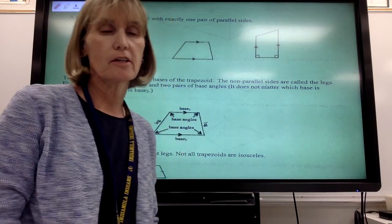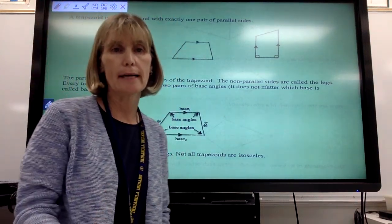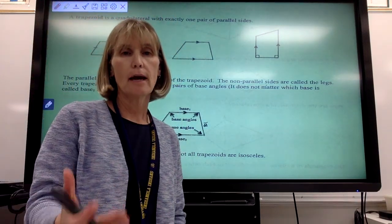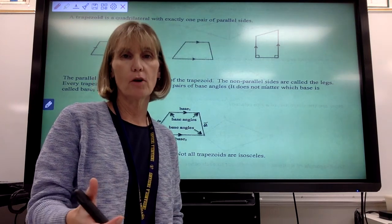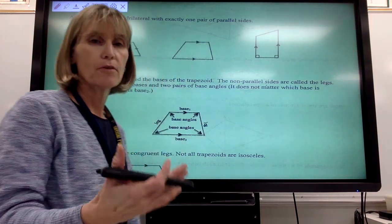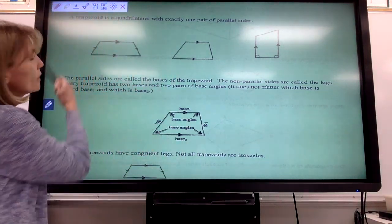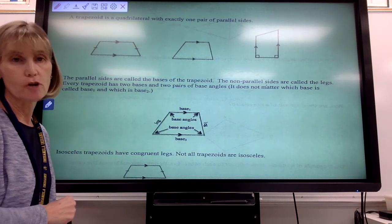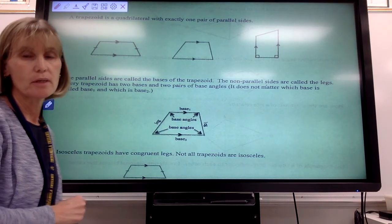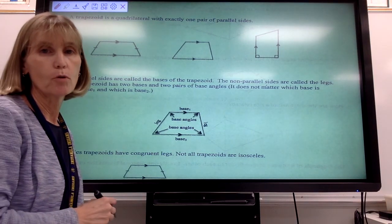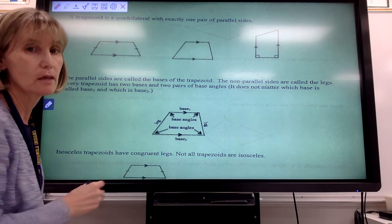In the second part of section 6-2, we've talked about kites. A kite was a quadrilateral, a type of quadrilateral. But there's another type of quadrilateral that we're going to look at, and it's called a trapezoid. A trapezoid is a quadrilateral with exactly one pair of parallel sides.